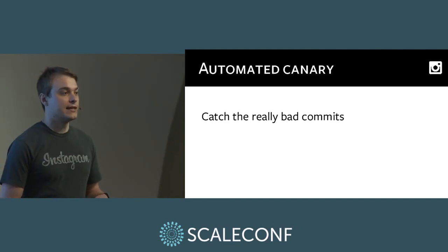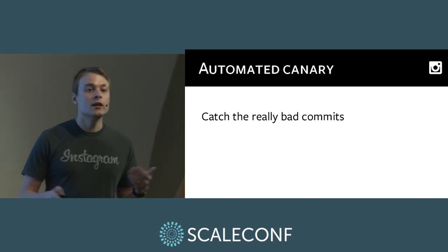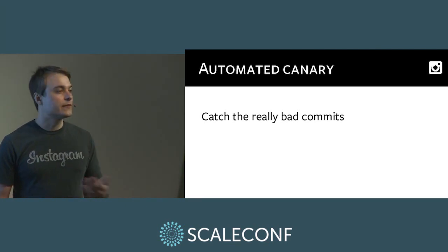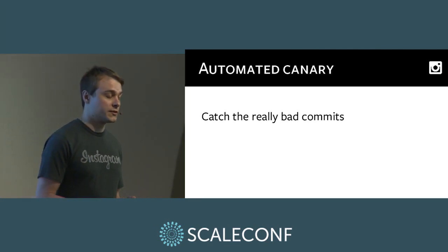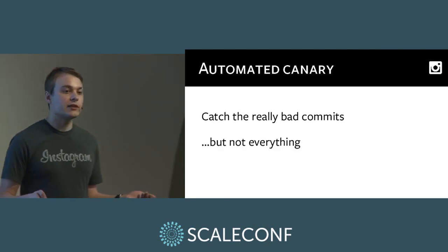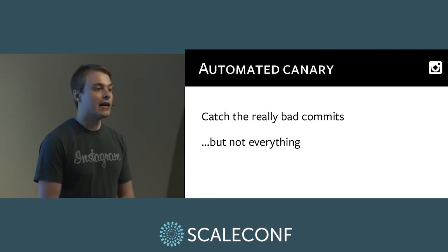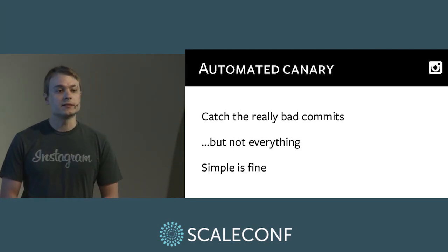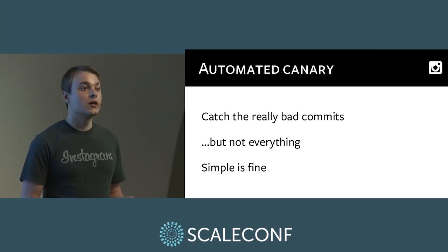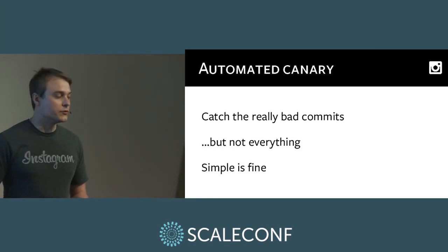Second, you need an automated canary — a way to test a change with a small amount of production traffic before deploying to the entire fleet. Its purpose is to catch the really bad commits: things that cause tens of percents of requests to fail. But it doesn't have to catch everything. Start with something simple — Instagram is still using these percentage-based thresholds on overall HTTP status codes, and it's good enough for us. Third, have the automation handle things that are in the normal good case. If anything is not normal, just have it stop and let humans step in. The automation doesn't need to handle every possible situation.